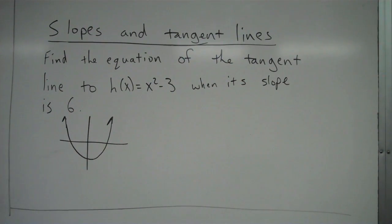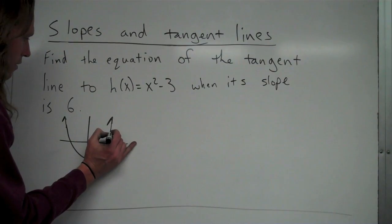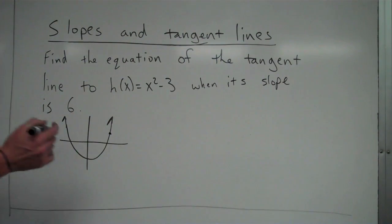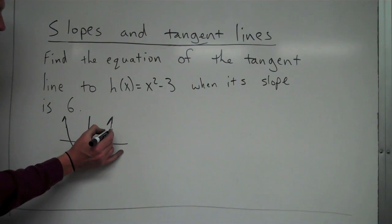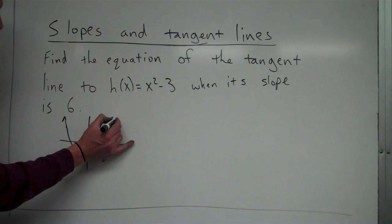So if you look here, let's say for instance it's right here. So right here the slope is 6. Now we don't know the x value yet, but if the slope is 6 on the graph right there, then that's the spot that we're talking about to make a tangent line at that point.